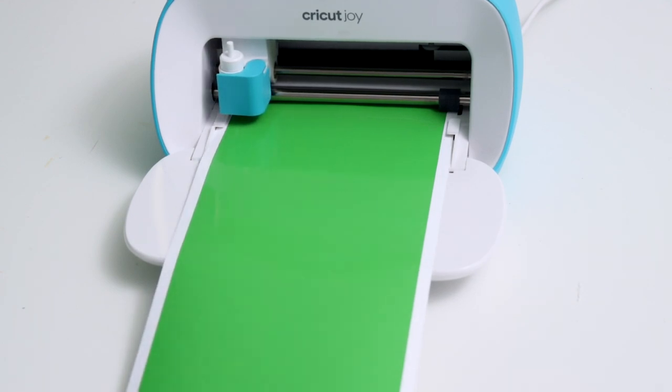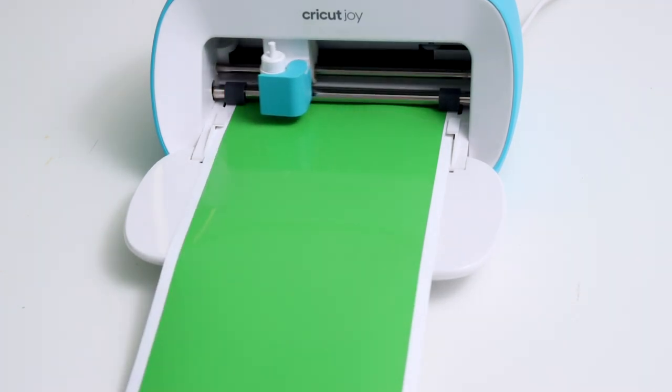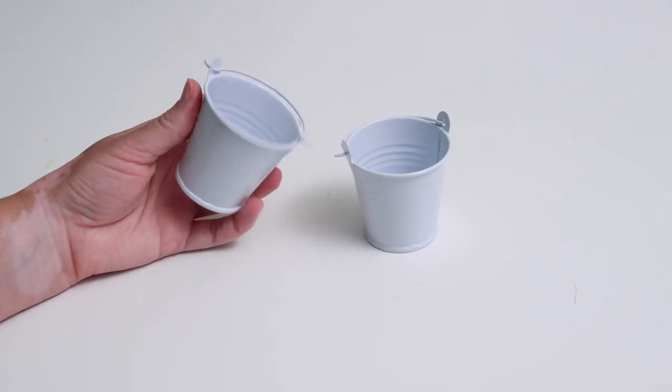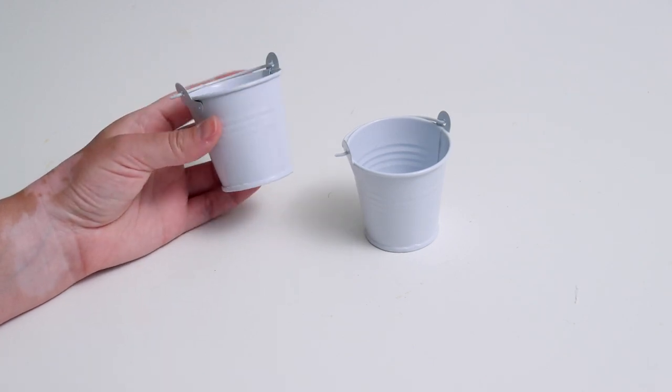You can see here it took away the polka dots. Then I can go ahead and load my materials in and just cut out all of the different shapes that I decided to do. I also decided to do some little tropical leaves as well - I thought that would be really cute.